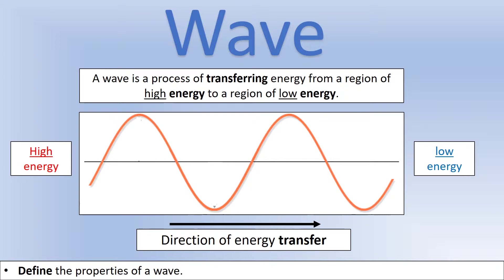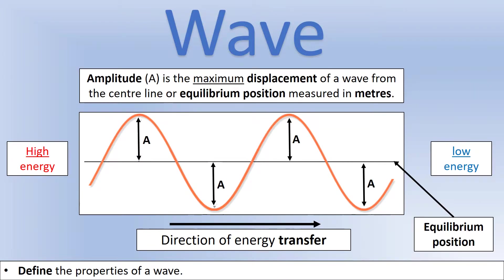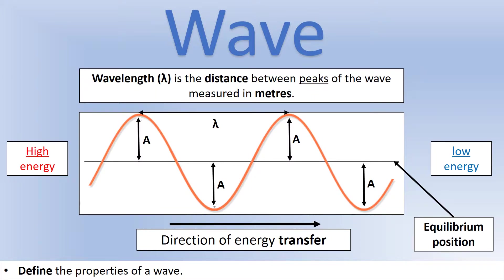The first thing we're interested in measuring, because it tells us about the energy of the wave, is the amplitude, which we give the symbol A. This is an expression of the maximum displacement of a wave from the center line, which we often call the equilibrium position — that's the one running through the middle. We measure amplitude in meters because it's a distance from this equilibrium position.